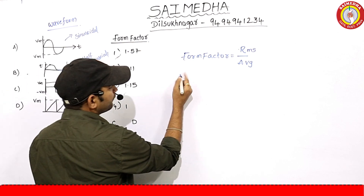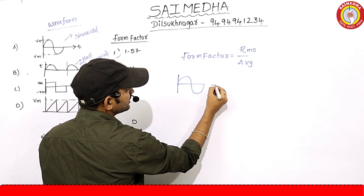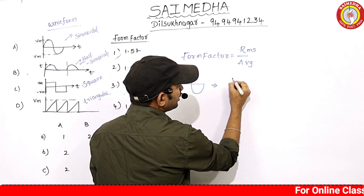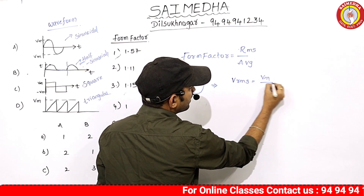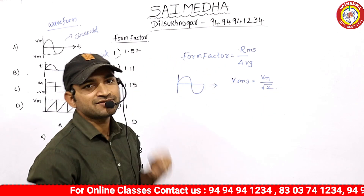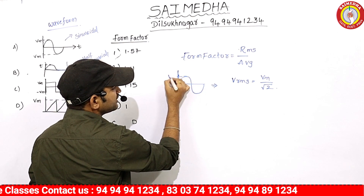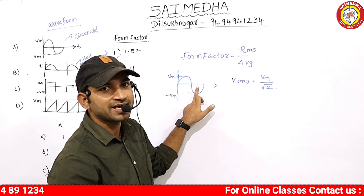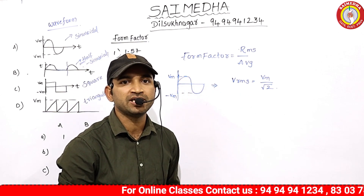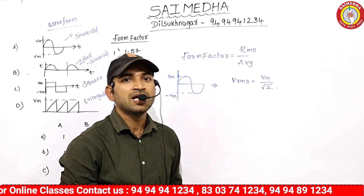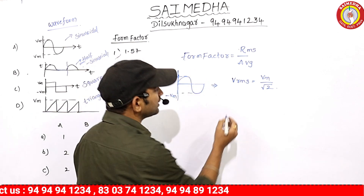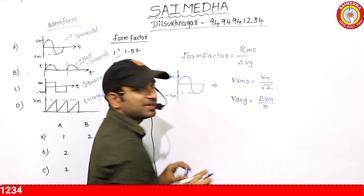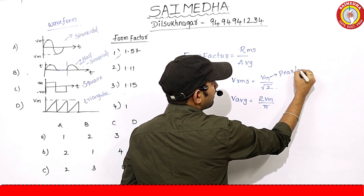For the sinusoidal waveform, we need to calculate the RMS value divided by average value. For a full sinusoidal waveform, the positive area and negative area cancel, making the average value zero. So we calculate the average value using the half sinusoidal waveform: average value equals 2 times Vm divided by pi, where Vm is the peak (maximum) value.